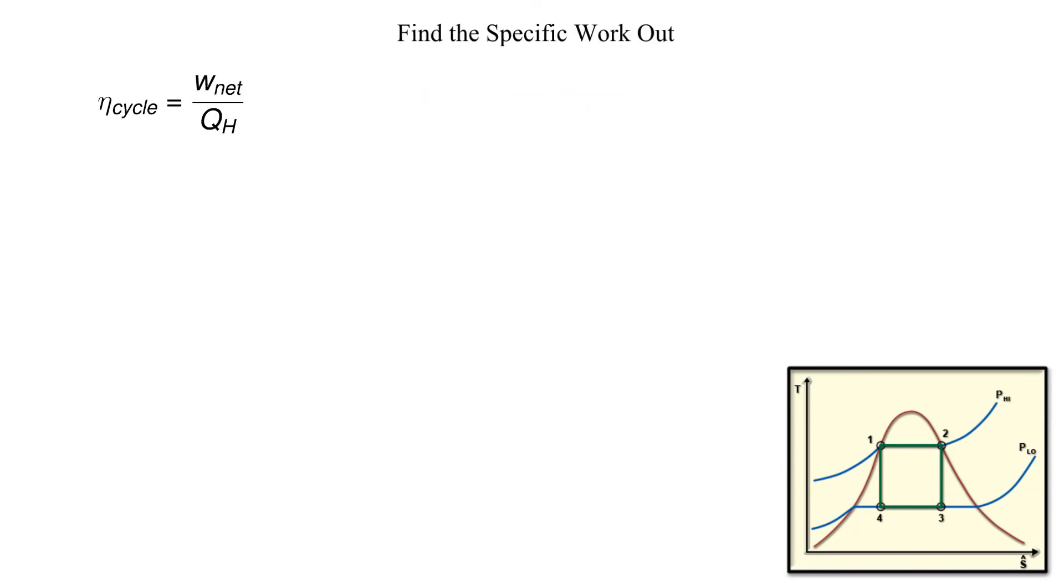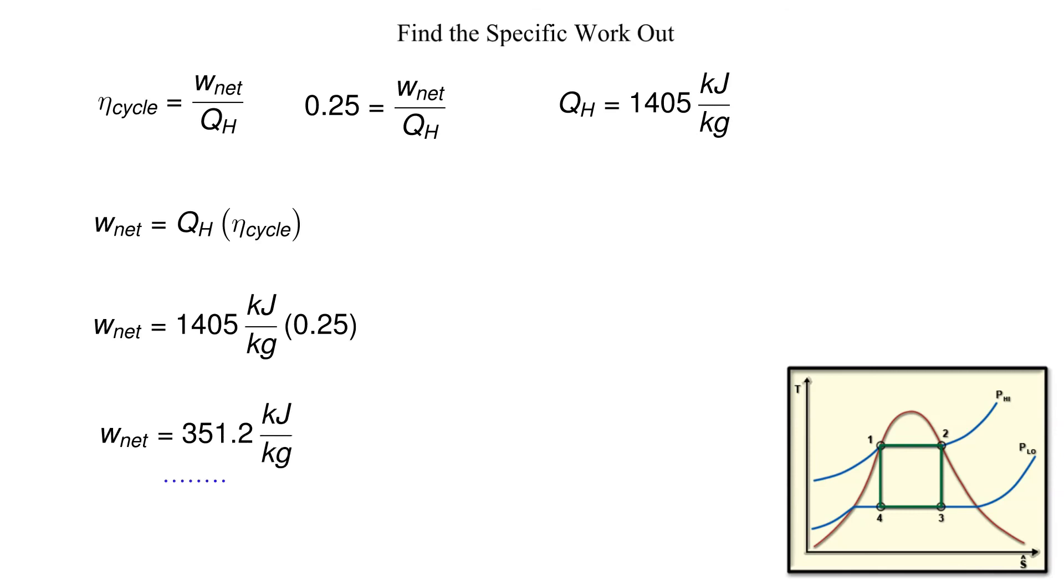Now we can return to our cycle thermal efficiency equation and solve for the specific work output. The specific work output is 351.2 kilojoules per kilogram.